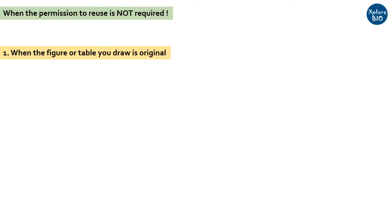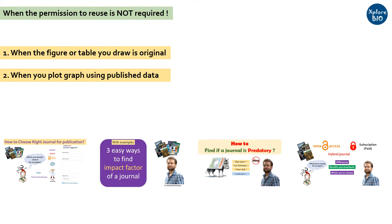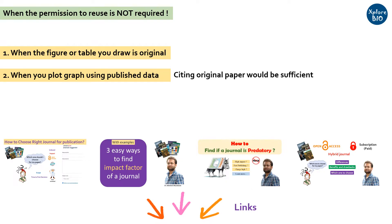When you make an original figure or table not reported earlier, or when it is significantly different from any of the published ones, you do not need to obtain any permission to reuse it. When you redraw a figure that is significantly different from a published one, or when you plot published data in your own style as a figure, citing the original source is enough.